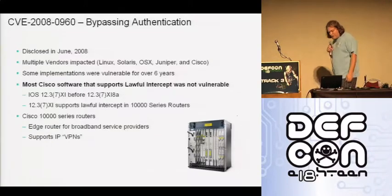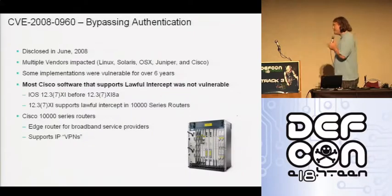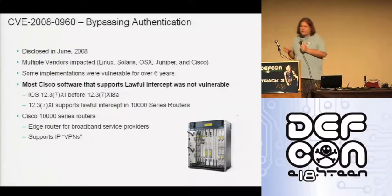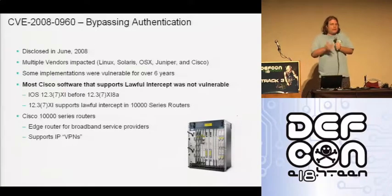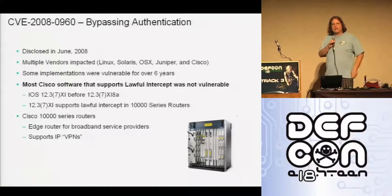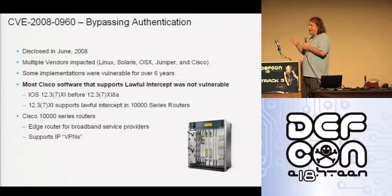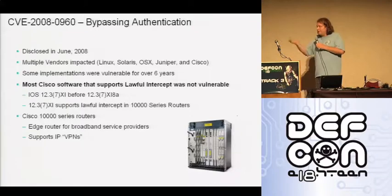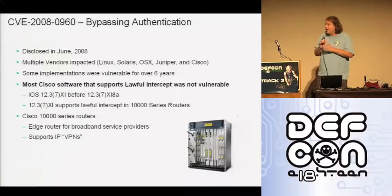This vulnerability was disclosed in June 2008 and impacted many vendors. Interestingly, many iOS software trains that support Lawful Intercept were never vulnerable to this vulnerability, even though both the vulnerability and Lawful Intercept have coexisted in iOS version trains for many years. Cisco clearly had two source branches — one had the bug and one didn't. I did find one version that had both the bug and the feature. The Cisco 10000 series router supports that particular iOS version train and had both the vulnerability and the Lawful Intercept feature.